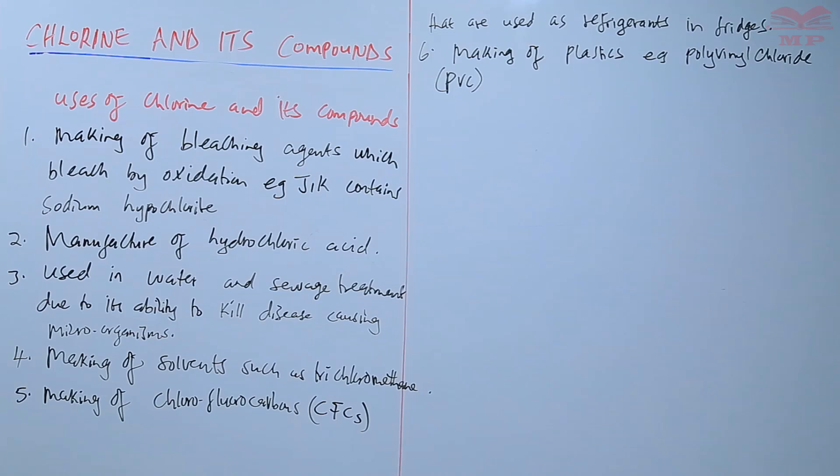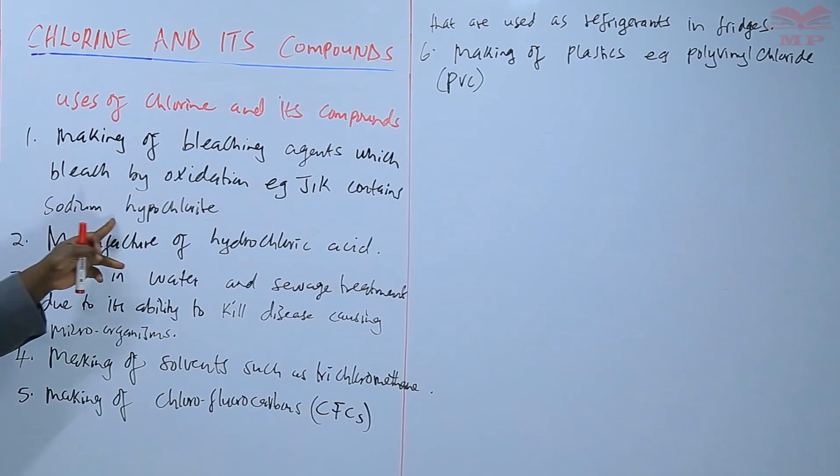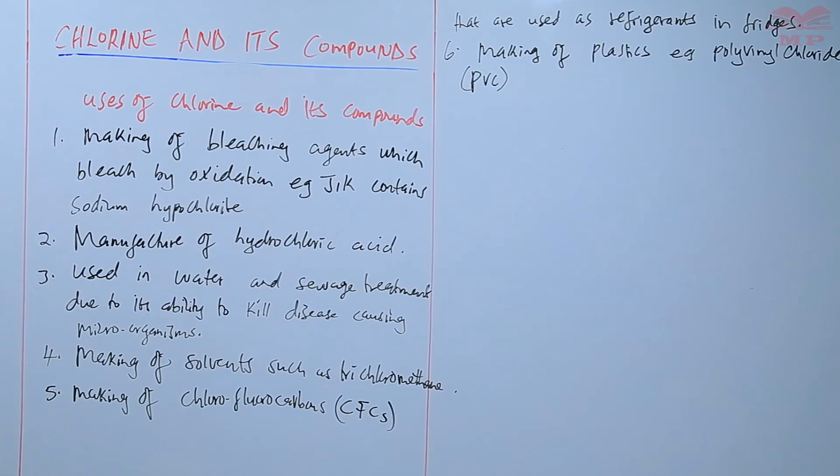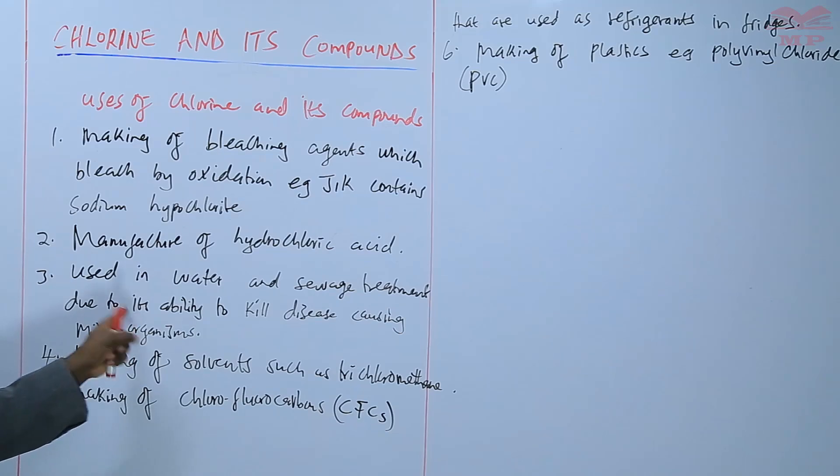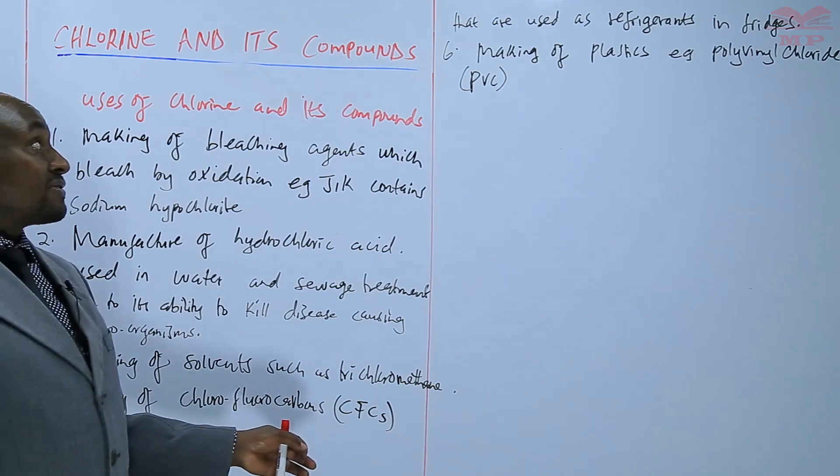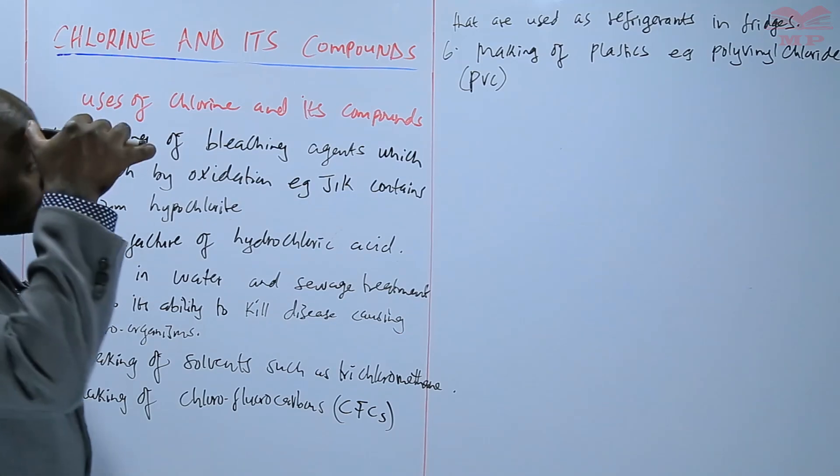So basically we have seen a number of uses: making of bleaching agents like GIC containing sodium hypochlorite, manufacture of hydrochloric acid, water and sewage treatment, making of solvents such as trichloromethane, making of chlorofluorocarbons (CFCs) used as refrigerants in fridges, and making of plastics such as polyvinyl chloride.